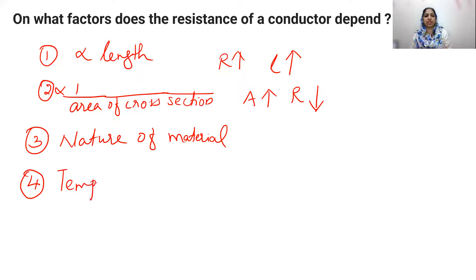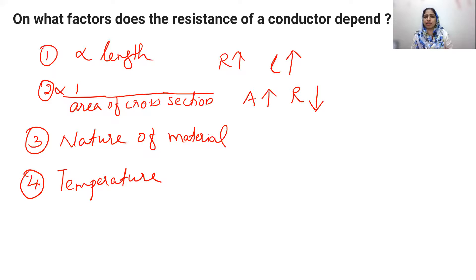When the temperature of metals increases, resistance will increase. Semiconductors behave differently, but for metals, when temperature increases, resistance also increases. So the four factors are: length increases — resistance increases; area increases — resistance decreases; nature of the material; and temperature.